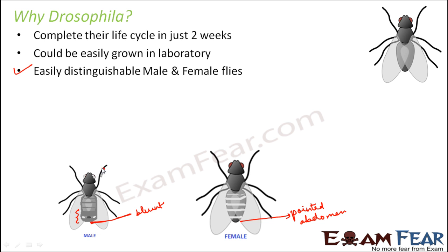Another important distinguishing feature is that sex combs are present on the fore limbs of the male fruit fly. From a distance they look very small, but when observed closely they are in the shape of a comb. These sex combs can only be seen under a microscope as they are so tiny, and they are not present in female Drosophila. These differences make male and female Drosophila very distinct and easily distinguishable.